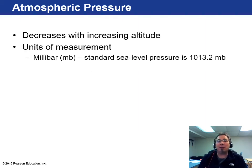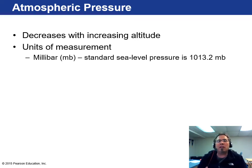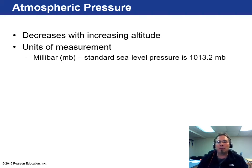Atmospheric pressure decreases with increasing altitude. Meteorologists have to account for this — otherwise places like Denver, at 5,000 feet above sea level, would always appear to have lower pressure than Milwaukee at about 630 feet. The unit used by meteorologists in the United States is the millibar, and standard sea level pressure is approximately 1013.2 millibars, though it does fluctuate a little.